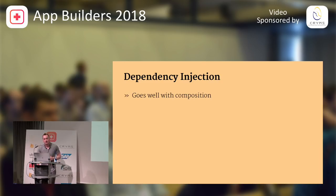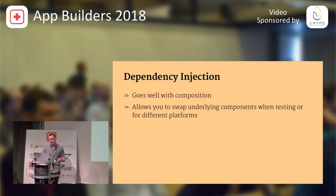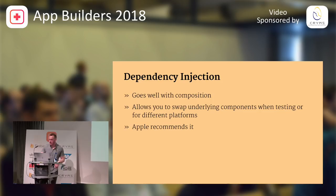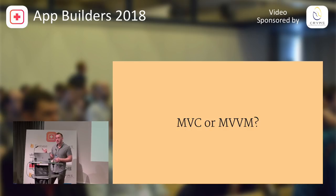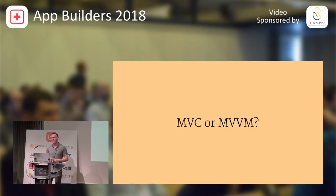Dependency injection goes very well with composition — it allows you to swap components when testing or configuring for different use cases. Apple recommends dependency injection but, frankly, they do it completely wrong. Let's quickly look at MVC versus MVVM. One important thing a lot of people get wrong: these are not architecture patterns — they are UI architecture patterns. You still have to design your data processing and all the rest.